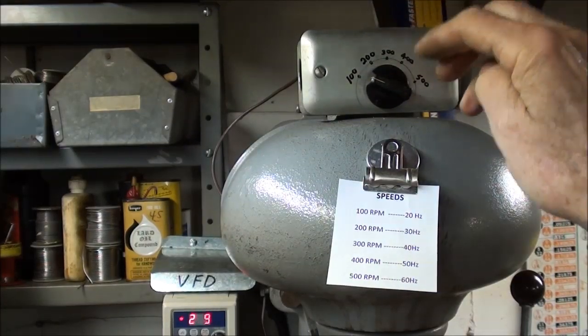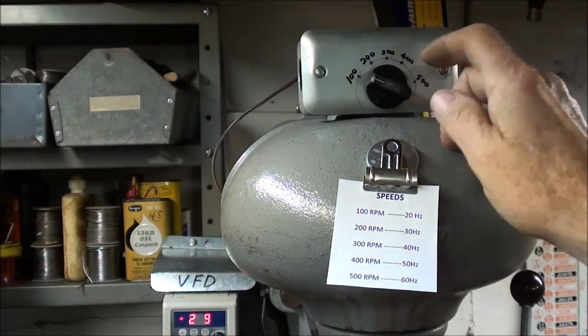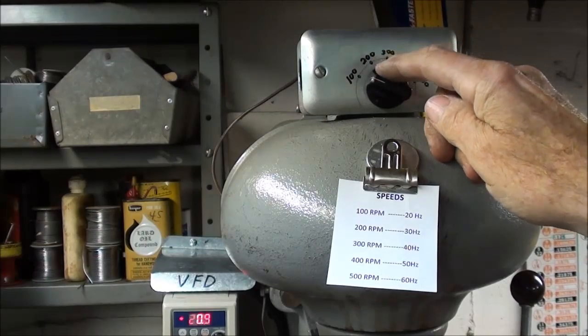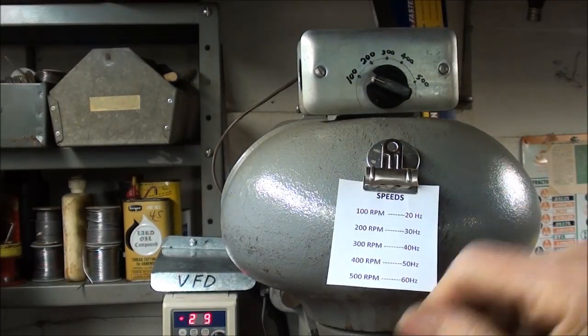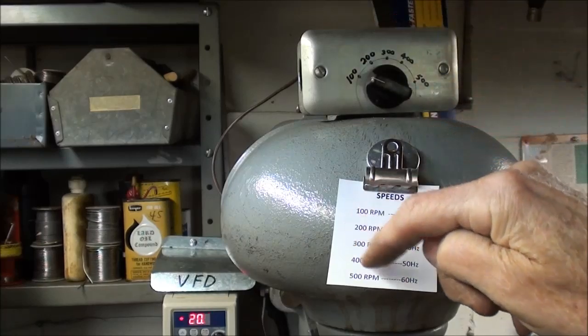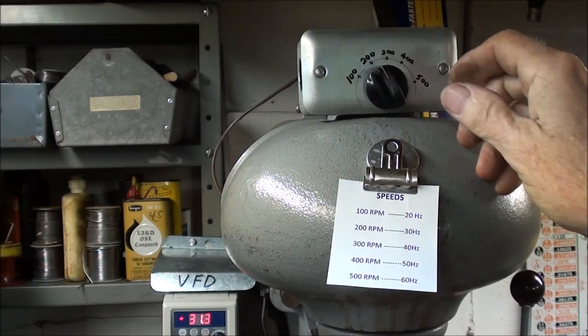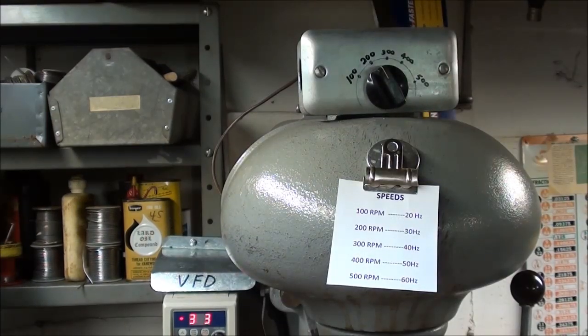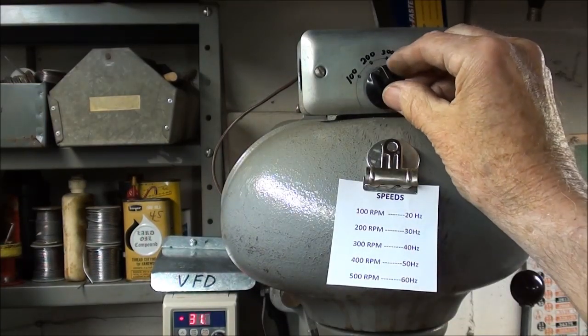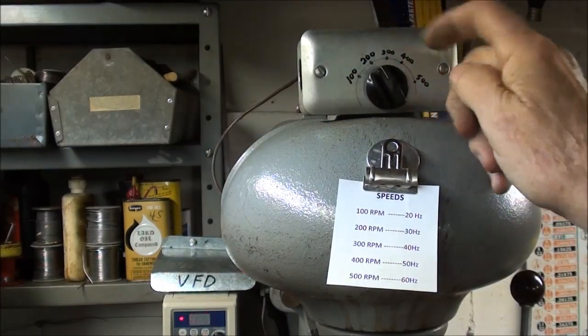Now I'm going to mount this on the machine. The VFD, this is 100 RPM. Remember I made this little speed chart. So when I move this up to 200, the VFD is going to read around 30. I'm a little bit over. Or, in other words, 200 RPM.